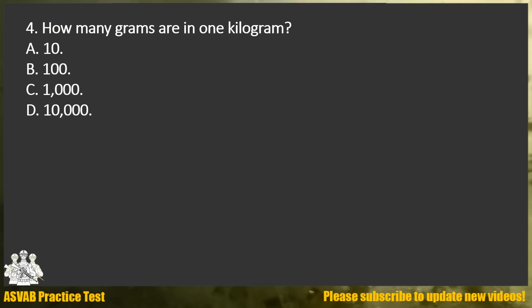Question 4. How many grams are in one kilogram? A. 10. B. 100. C. 1,000. D. 10,000.